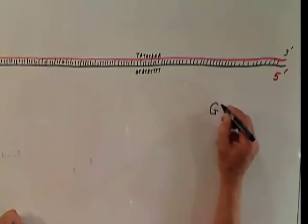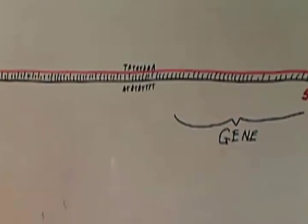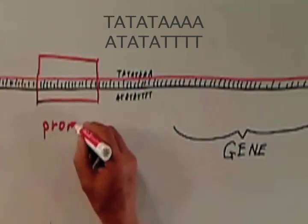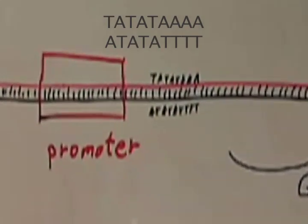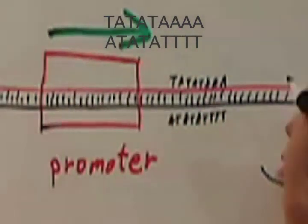Initiation of transcription is a very complex dance of many proteins and is only now beginning to be understood. In eukaryotic organisms, 25% of the gene promoters include a series of adenine and thymine base pairs.